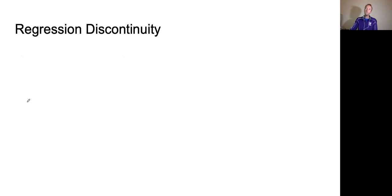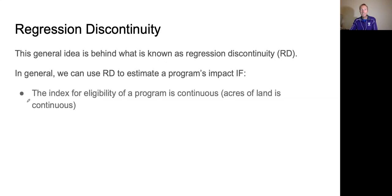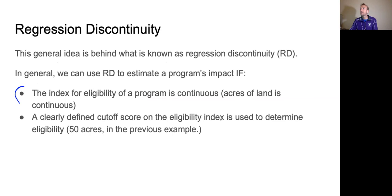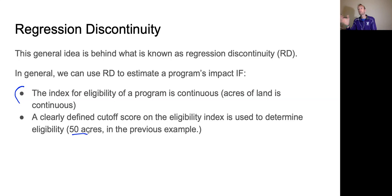This is known as a regression discontinuity. We can generally use a regression discontinuity to estimate a program's impact if the index for eligibility of a program is continuous. In this example, what's the index for eligibility? It's the acres of land — which is continuous: you can have 1, 2, 3, 4, 2.1, 2.2. And there must be a clearly defined cutoff score on the eligibility index used to determine eligibility. Here, 50 acres is a clearly defined mark that allows farmers smaller than 50 to get the program and farmers above 50 to not get it.